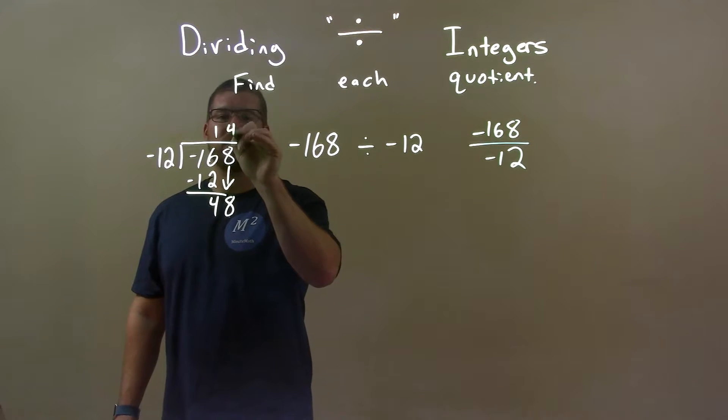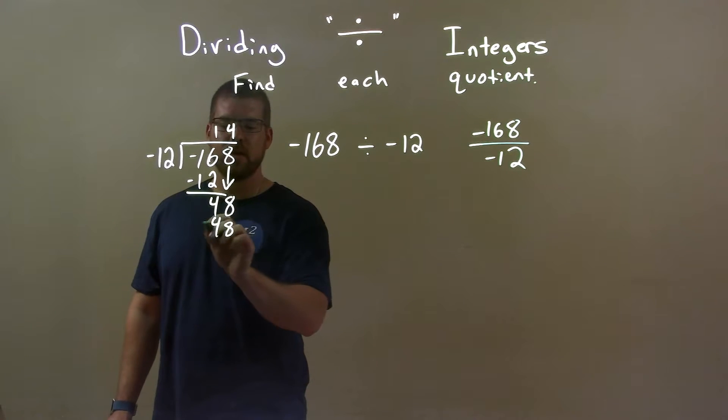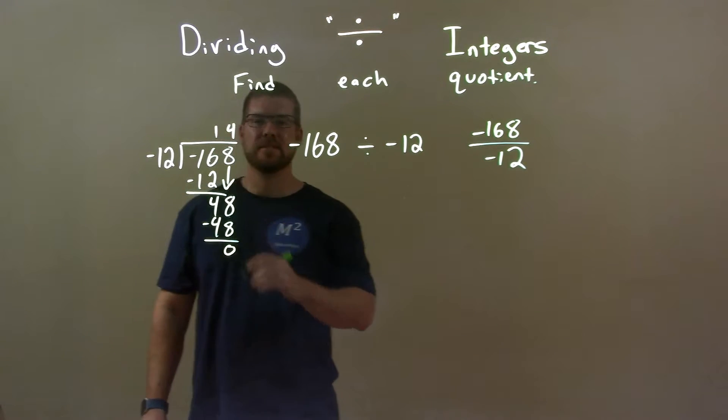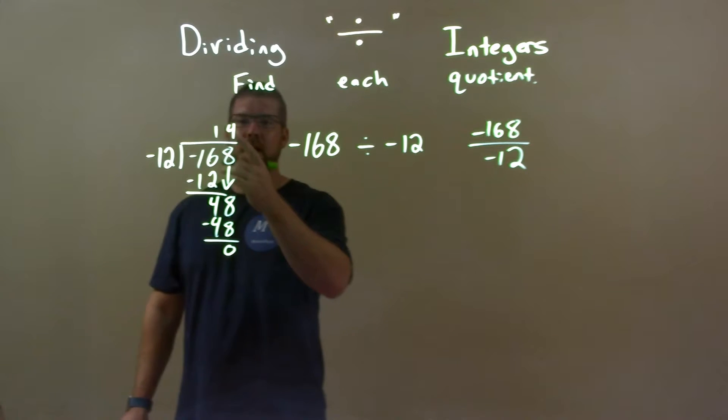And that is just going to be a 4. 4 times 12 is 48. Subtract these and we get 0. So we're kind of done here.